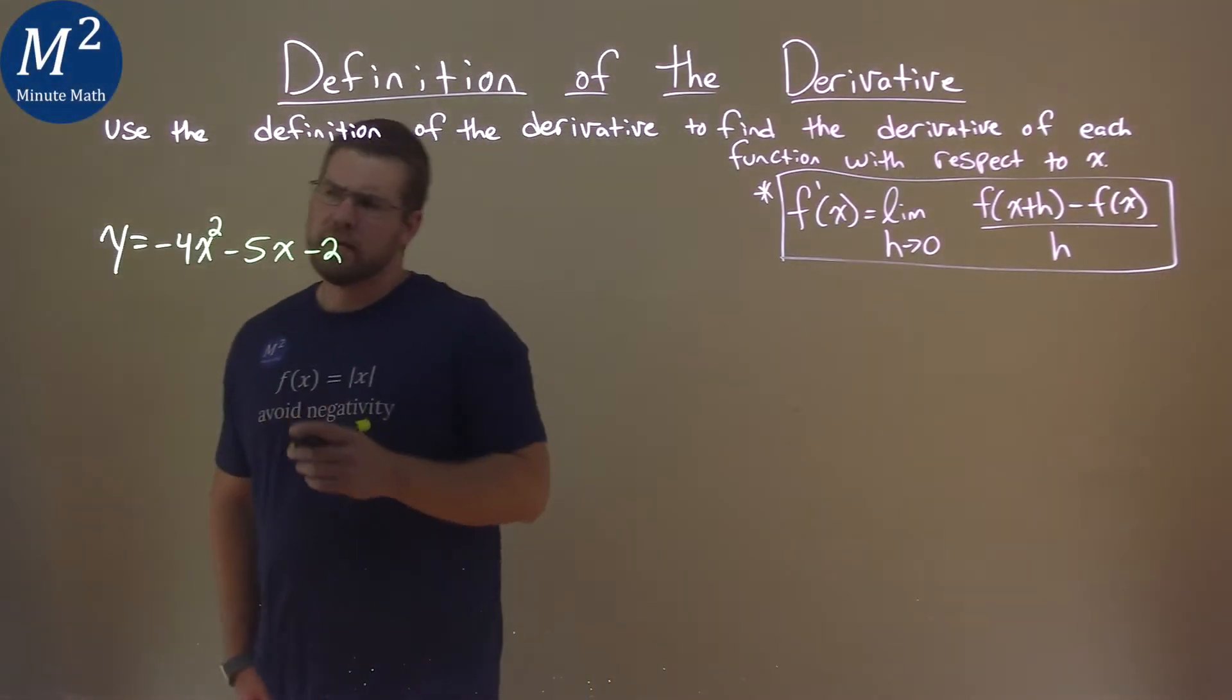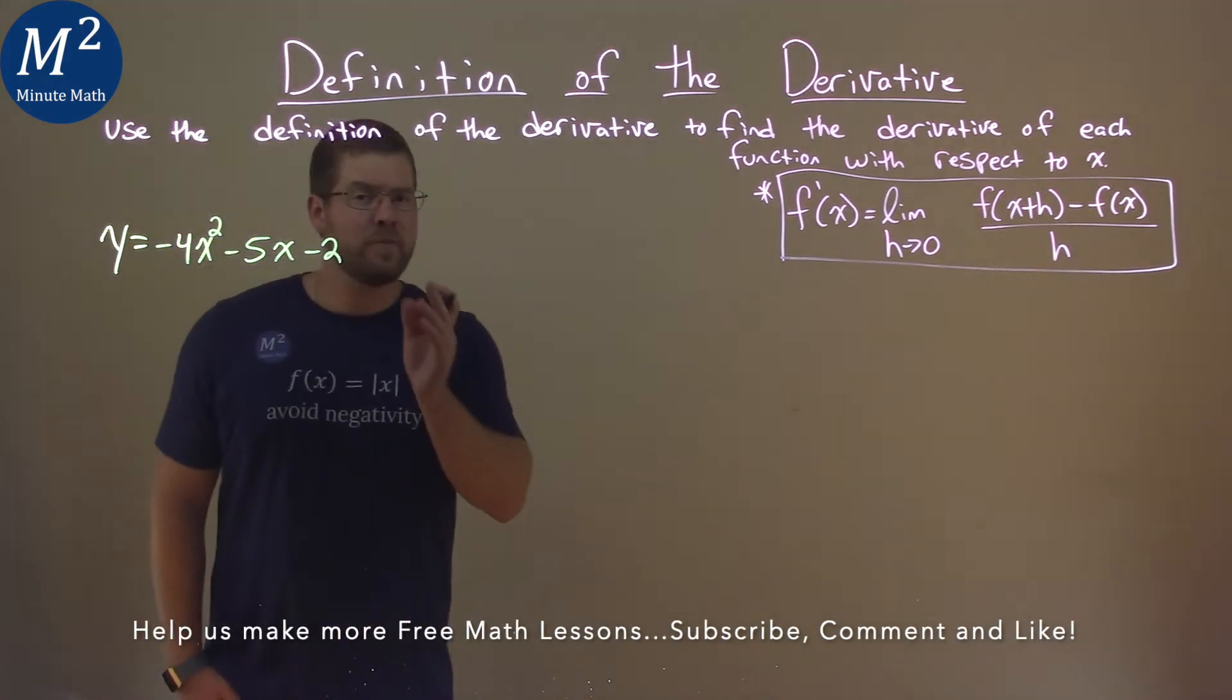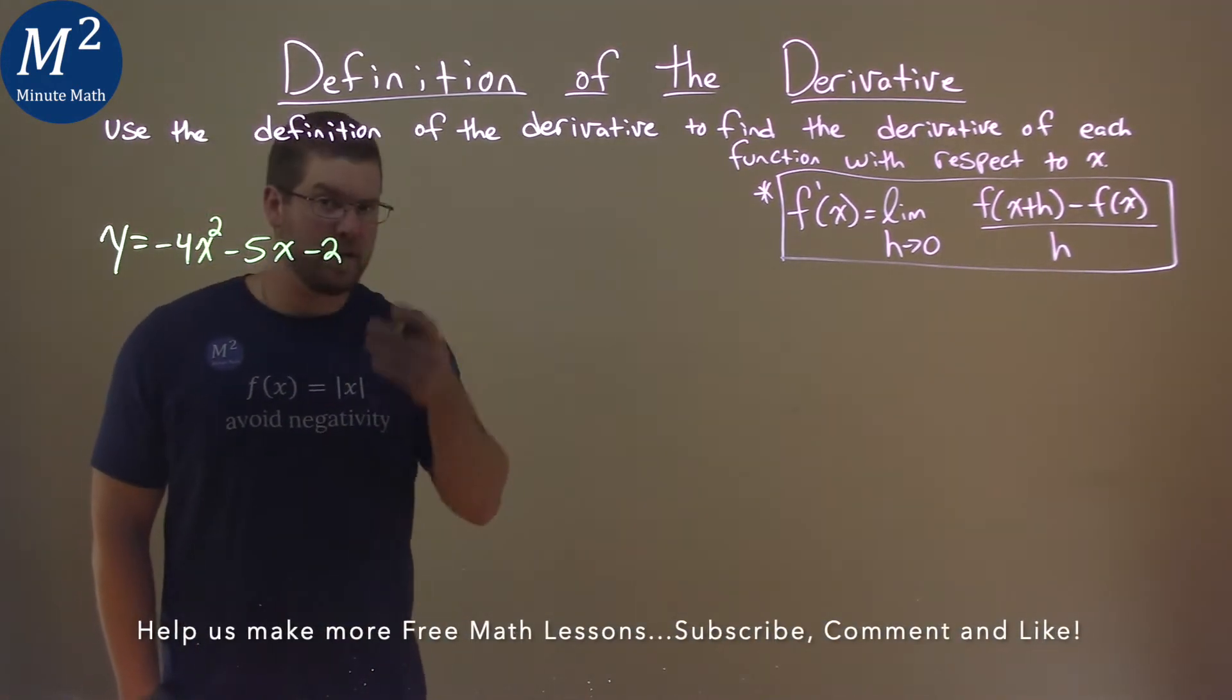We're given this problem right here: y equals negative 4x squared minus 5x minus 2, and we have to find the derivative of this using the definition of the derivative.